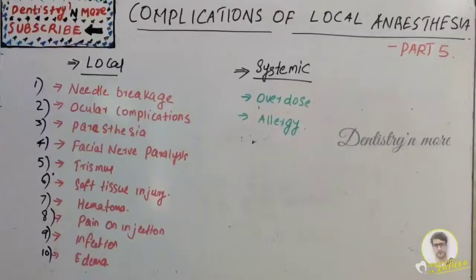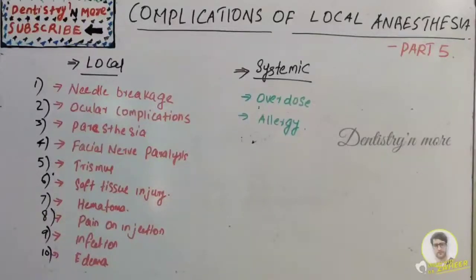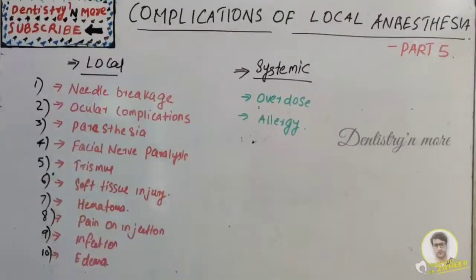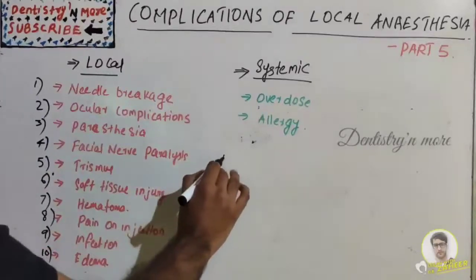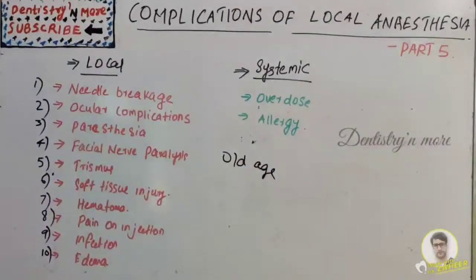Now moving to systemic complications. The first is overdose. Overdose reaction occurs when the drug accesses the circulatory system. Normally there is constant absorption of the drug from its site of administration, excretion into the circulatory system, and steady removal by the liver. If overdose occurs, symptoms will manifest in the body.